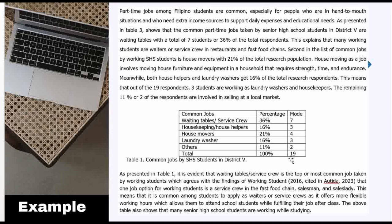I discussed and presented all the results — not just the first one. For example: out of 19 respondents, three students are working as laundry washers and housekeepers. The remaining 11 percent, or two of the respondents, are involved in selling at a local market — those are the 'other jobs.' After presenting the table, that is not yet the end of presenting your results.